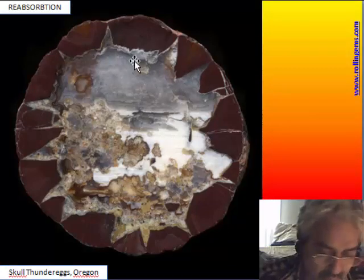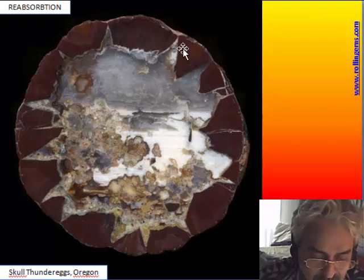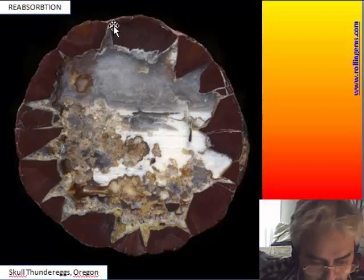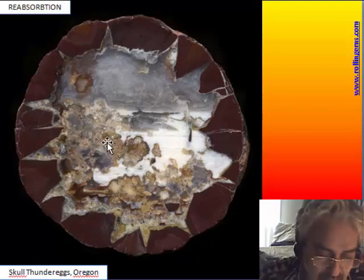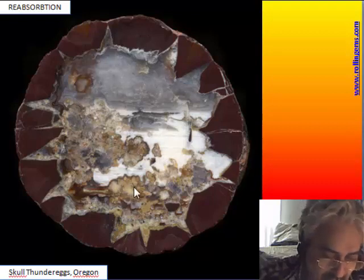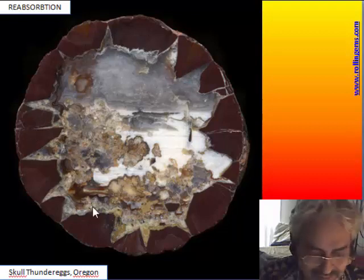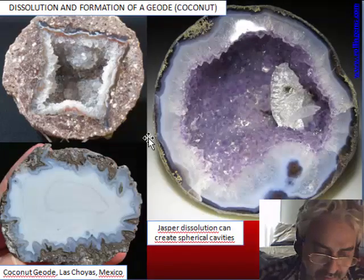This is a thunder egg where it is possible to realize that the cavity is too big for the little jasper present. We can see the fibrous spherulites that are the tops of the conic shapes, which are being reabsorbed — all the points are reabsorbed. It is possible that the jasper filling the cavity is reabsorbed and put into solution by a change in the pH of the water, thereby creating a cavity that is bigger than expected.